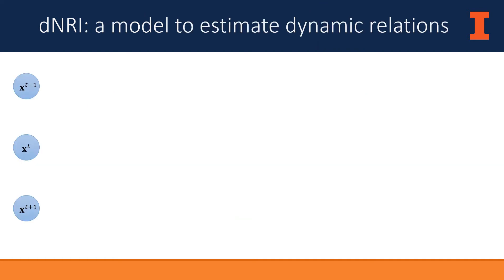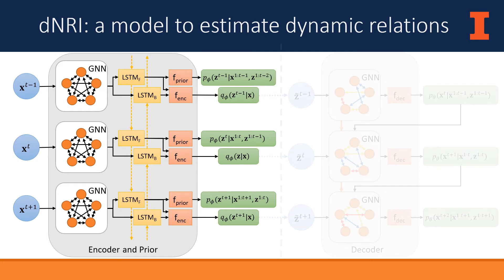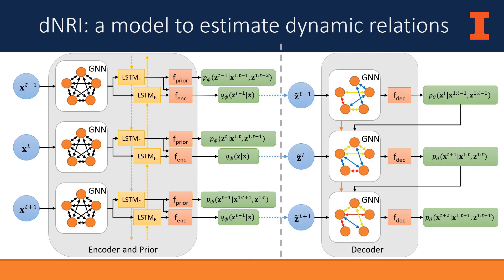To recap, given a set of input trajectories, DNRI first passes them through the encoder and the prior to produce distributions over the relations between each pair of entities at every point in time. Relation variables are sampled from the appropriate distribution, which are then used by the decoder to select the appropriate graph neural network parameters for each pair of entities, which are then used to predict their future states.